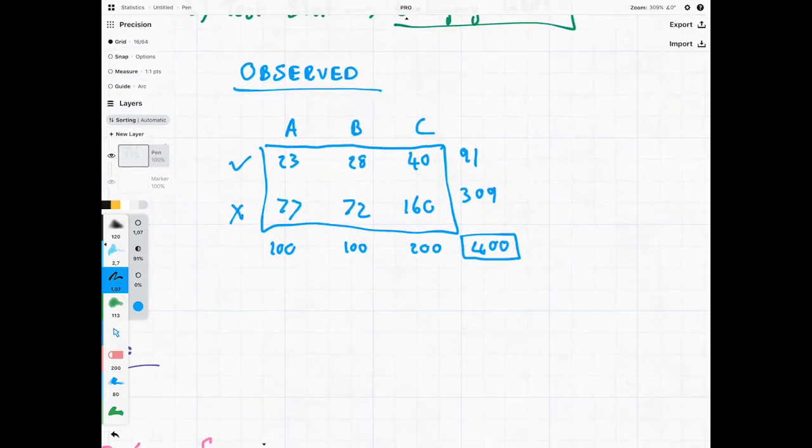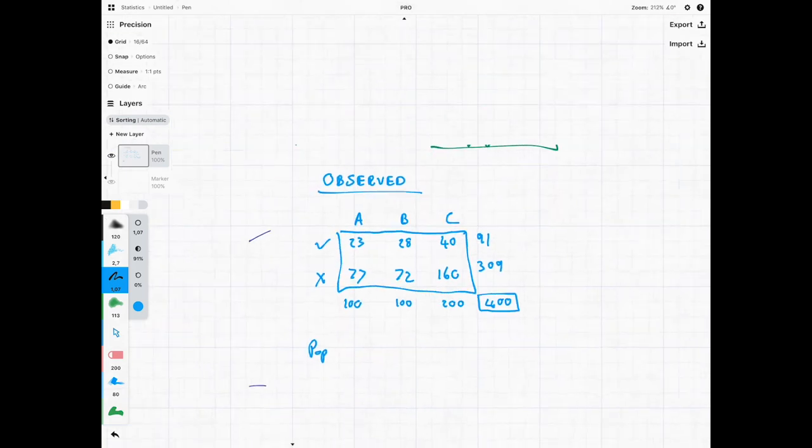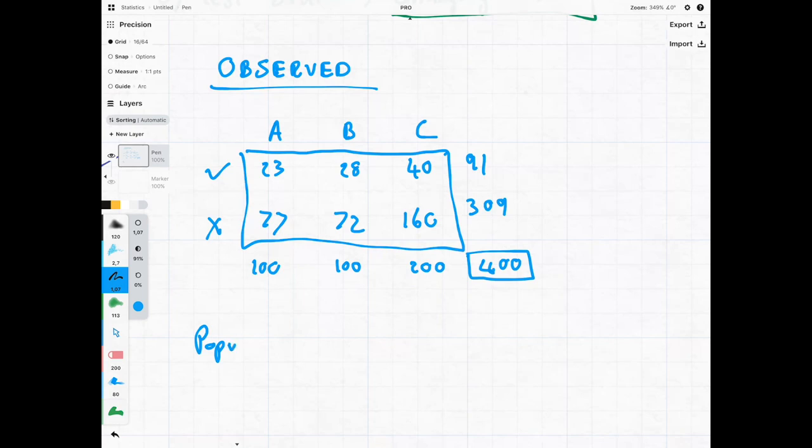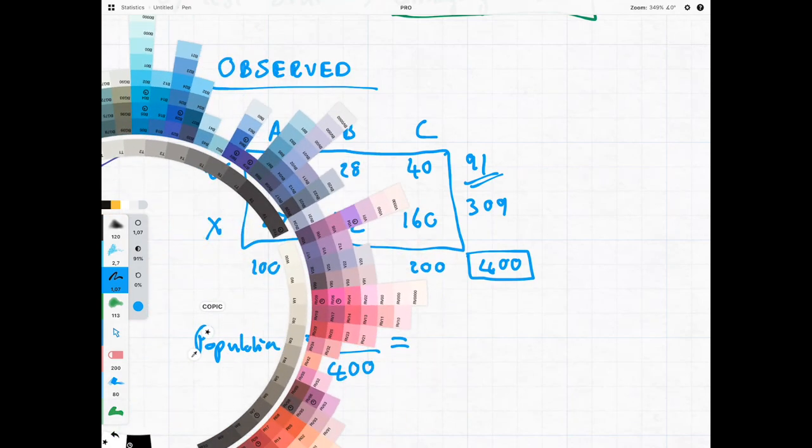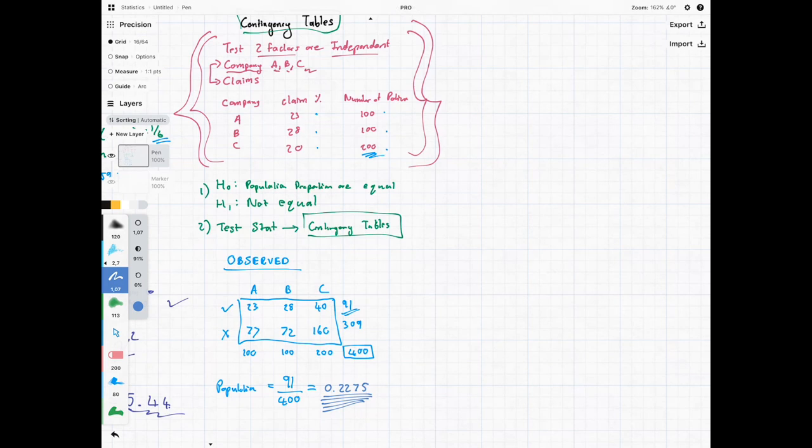So what we're going to see is if we assume that these things - remember hypothesis testing we're making the assumption that these things are independent. So therefore if they are independent they're all coming from the same population, we can combine them all together. So we can have this big overall population proportion which is equal to 91 divided by 400. That's going to give us this value over here. You can put that in your calculator and you get 0.2275.